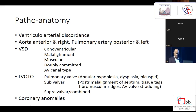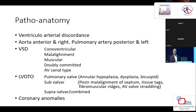In the pathoanatomy, we know there is ventriculo-arterial discordance — generally aorta anterior, pulmonary posterior, with possible obliquity. VSDs are commonly conoventricular or perimembranous type; malaligned varieties and muscular types are rare, and doubly committed or atrioventricular canal VSDs are also known. LVOTO can range from simple pulmonary valvar hypoplasia to thickened leaflets, subvalvar stenosis — specifically the conal septum turning posteriorly — fibromuscular bands, or combined forms. Coronary anomalies are fairly common in transpositions.